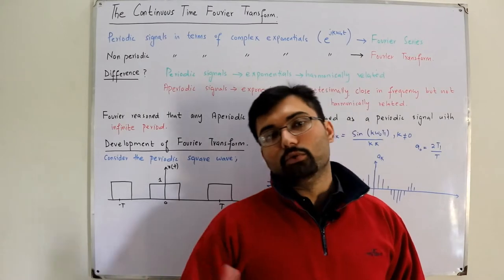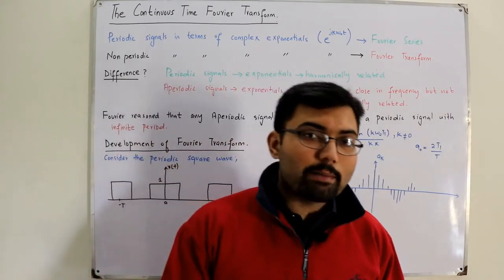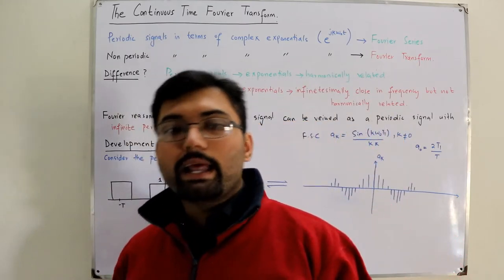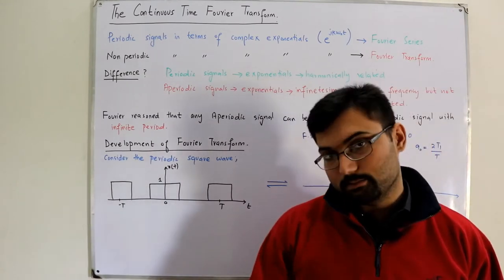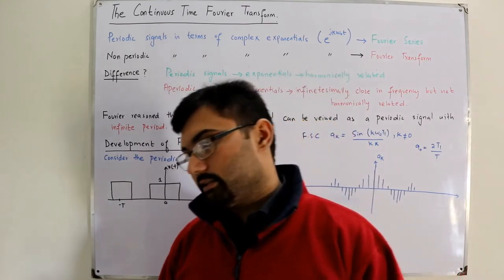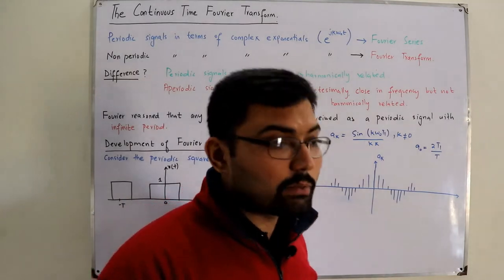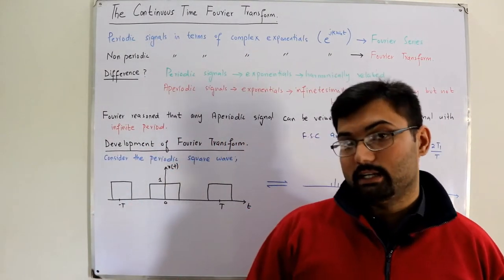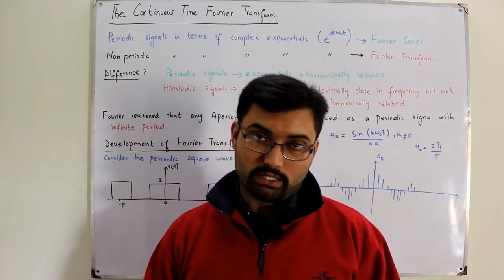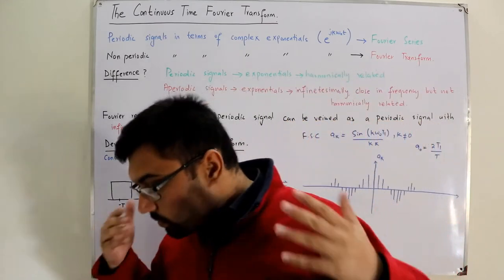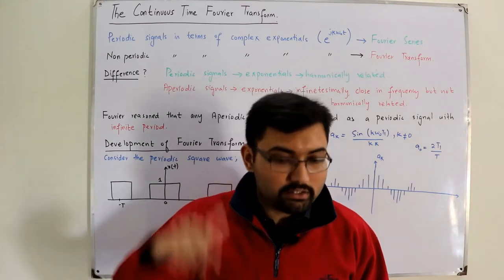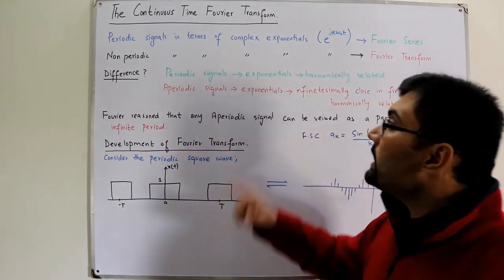Why did we start the Fourier series? The main objective was that we were fed up of using one standard signal again and again. We wanted to represent our signal in terms of complex exponential signals. We represented our signal in terms of complex exponential signals — in the continuous time case and in the discrete time case. But what was the limitation? The Fourier series representation was only valid for periodic signals. So what if we have aperiodic signals and we want to represent them in terms of complex exponential signals? The solution is the Fourier transform.